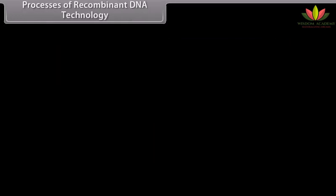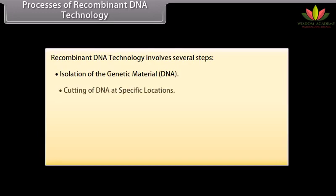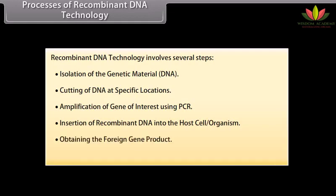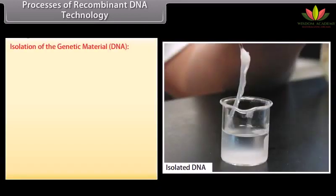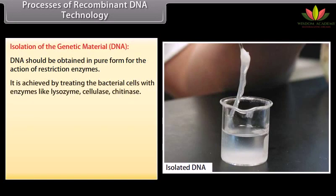Processes of recombinant DNA technology. Recombinant DNA technology involves several steps: isolation of the genetic material (DNA); cutting of DNA at specific locations; amplification of gene of interest using PCR; insertion of recombinant DNA into the host cell or organism; obtaining the foreign gene product; and downstream processing. Isolation of the genetic material: DNA should be obtained in pure form for the action of restriction enzymes. It is achieved by treating the bacterial cells with enzymes like lysozyme, cellulase, and chitinase.